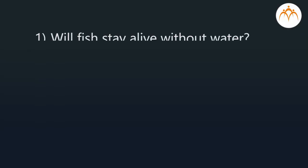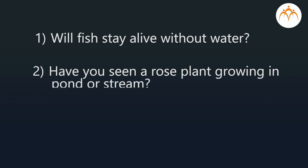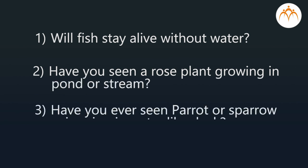Students, imagine if the following things happen. Will a fish stay alive without water? Have you seen a rose plant growing in a pond or stream? Have you ever seen a parrot or sparrow swimming in water like a duck? If a fish comes out of water for a long time, it would die. One cannot cultivate a rose plant in water as it needs soil to grow. A parrot or sparrow cannot swim in water like a duck. This happens because these organisms are away from their normal surroundings and are not adapted to the new conditions.